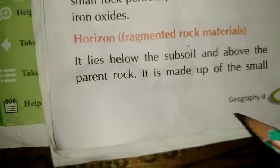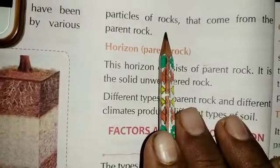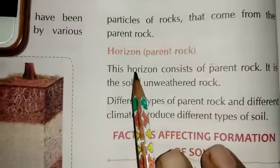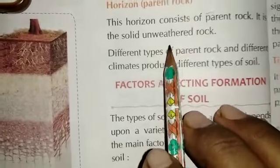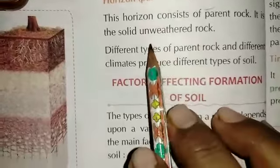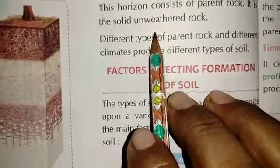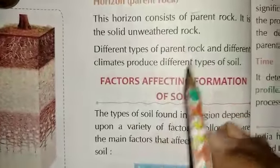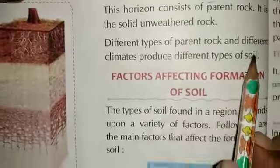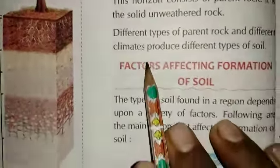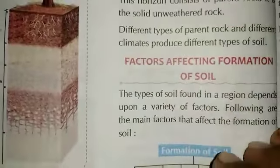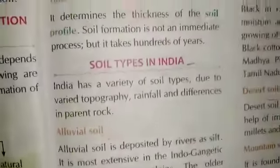This third layer is between the parent rock and the subsoil, made of small particles of rock. The last layer is the parent rock origin — this consists of solid, unweathered rock. Different types of parent rock and different climates produce different types of soil.